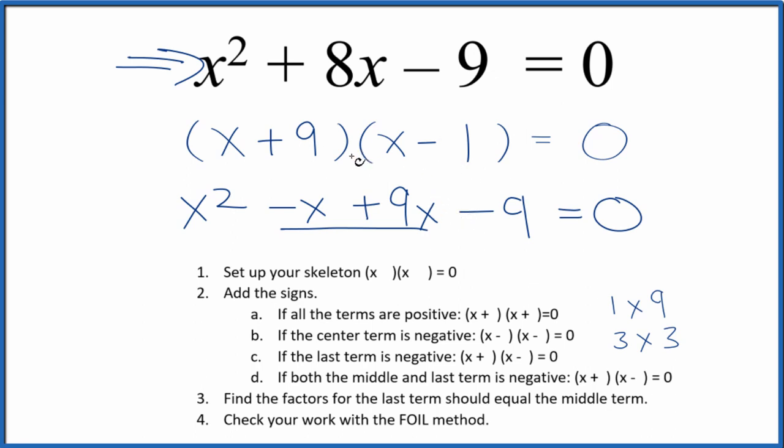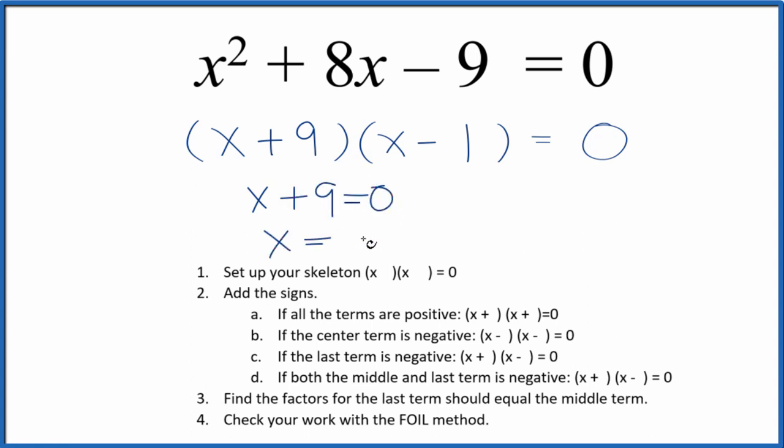Let's take a look at the values for x here that will make this whole statement 0. 0 equals 0. That's a true statement. So I could say x plus 9 equals 0, x would equal negative 9. Or x minus 1 equals 0, so x would equal 1.